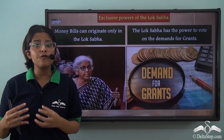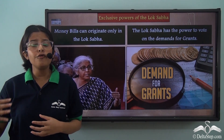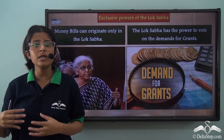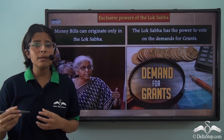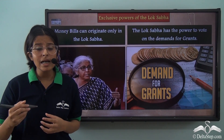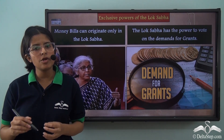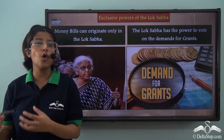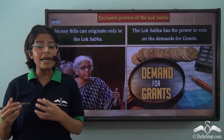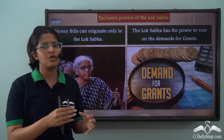There are sometimes needs for grants, that is requirements for money for the functioning of various ministries or branches of the executive. Only the Lok Sabha has the power to discuss and vote on these demands for grants. The Rajya Sabha can only discuss them, but it cannot vote on them. So in these two matters of financial importance, the Lok Sabha has more power than the Rajya Sabha.